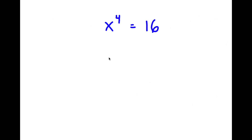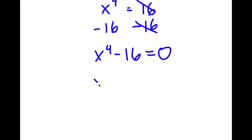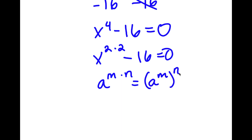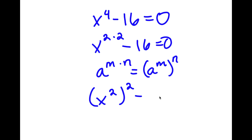In this problem, I have x to the power of 4 is equal to 16. I'm going to start by subtracting 16 on both sides, so I'm left with x⁴ minus 16 is equal to 0. Now x⁴ I'm going to write as x to the power of 2 times 2. And if I have something in the form a to the power of m times n, this equals a to the power of m to the power of n. So x² squared minus 4² equals 0.